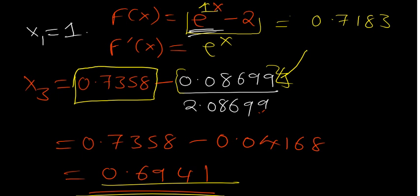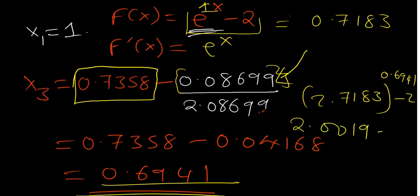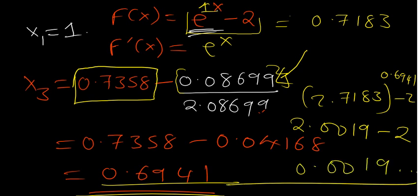If we continue with x₃ = 0.6941 and raise e ≈ 2.7183 to the power 0.6941, we get approximately 2.0019. Subtracting 2 gives approximately 0.019, which is almost zero. This confirms that Newton's method is working to find the roots of our function.